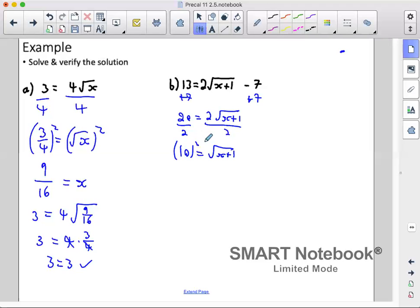Square both sides. So that gives us 100 is equal to x plus 1. Subtract 1 from both sides. That gives us 99 is equal to x.